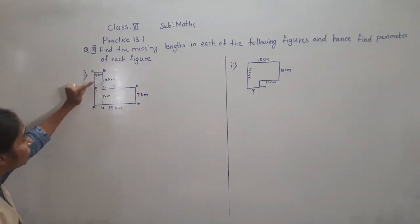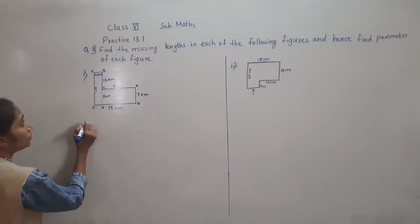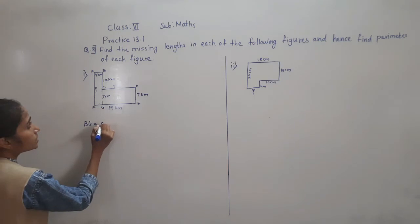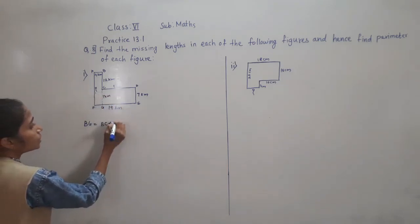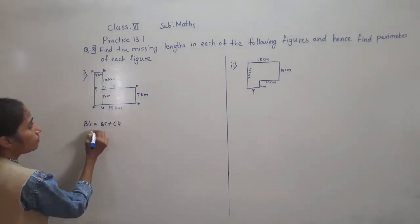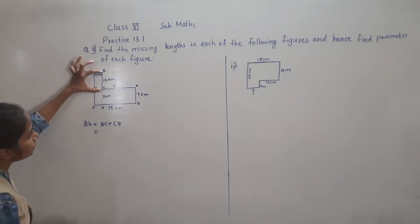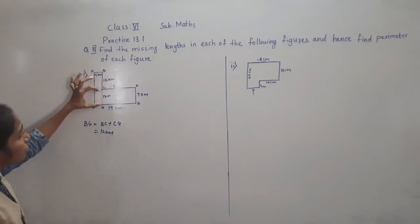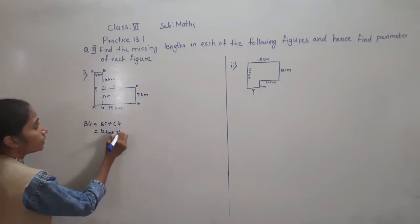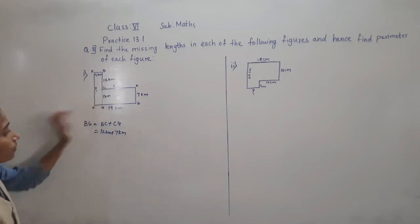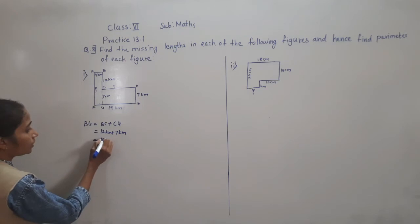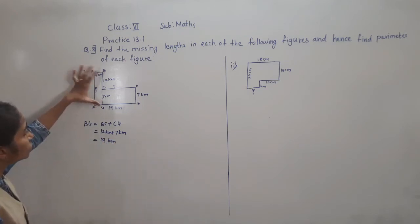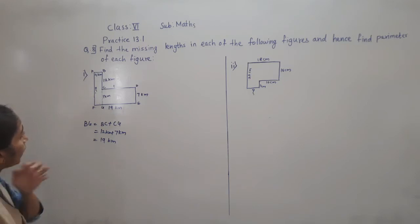So total BG: BG is equal to BC plus CG. BC is 12 km and CG is 7 km. So 12 plus 7 gives us BG = 19 km.